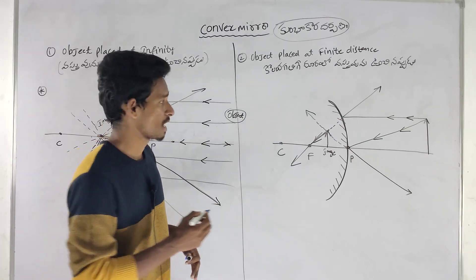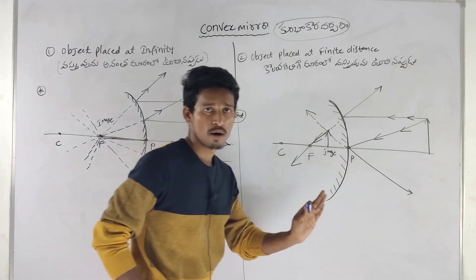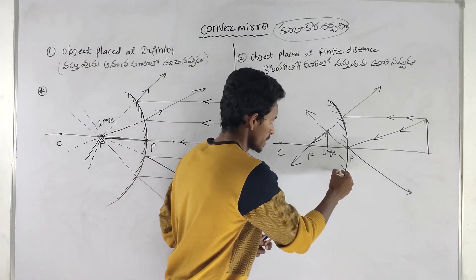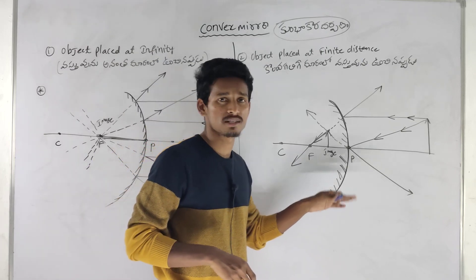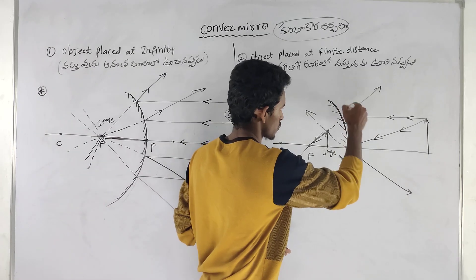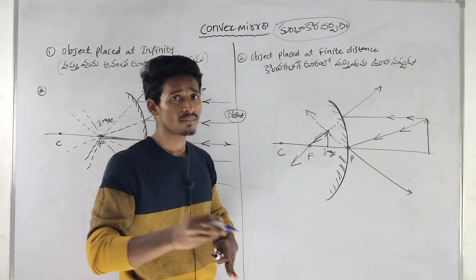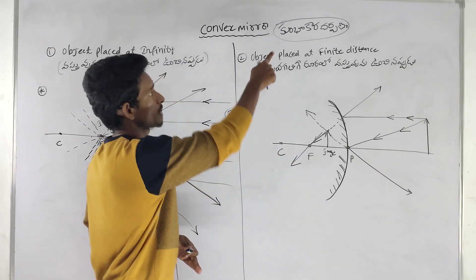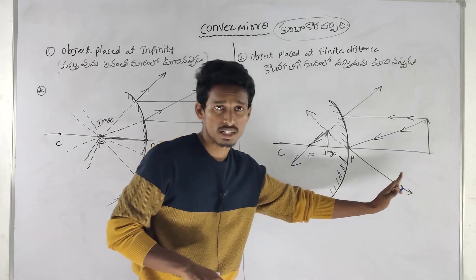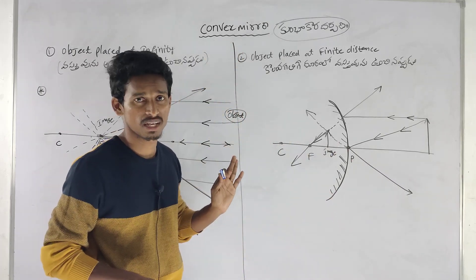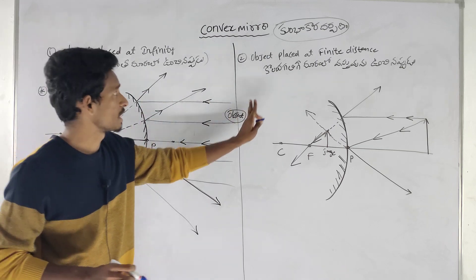The reflecting surface is outwards. This is inwards, this is outwards. What is reflecting? Inwards — we call that a concave surface. Outwards — we call it outwards. In that spherical mirror, if the reflecting surface is outwards, then that mirror is called a convex mirror. Here we have two cases.